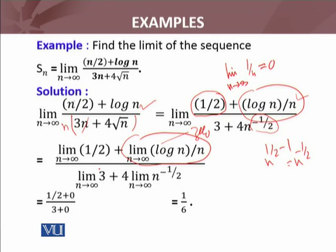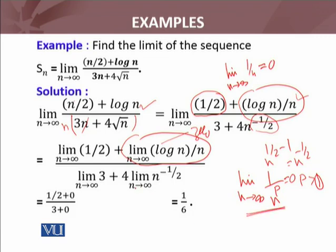The constant sequence 1/2 has limit 1/2 — we discussed that a constant sequence has limit equal to that constant. The 3 is also constant. For n raised to power −1/2, we discussed in special sequences that the limit of 1/n^p where p > 0 is 0, so this limit is also 0. Thus log n/n has limit 0 as well. We're left with (1/2) divided by 3, which equals 1/6.